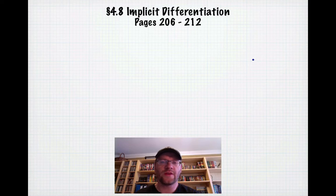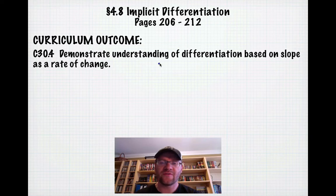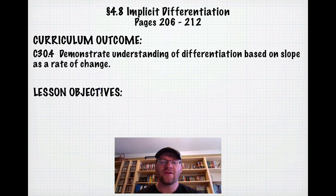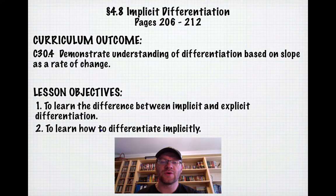Our topic today is 4.8, implicit differentiation. That's on pages 206 to 212 in your text. Our curriculum outcome is to demonstrate understanding of differentiation based on slope as a rate of change. Our lesson objectives are: number one, to learn the difference between implicit and explicit differentiation, and number two, to learn how to differentiate implicitly.